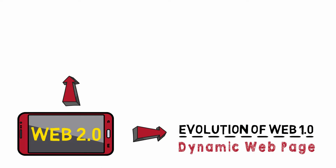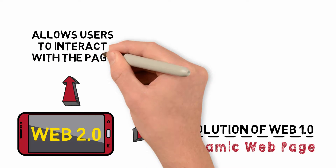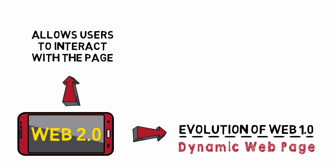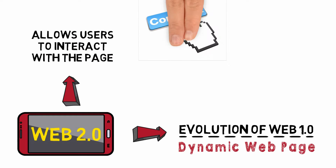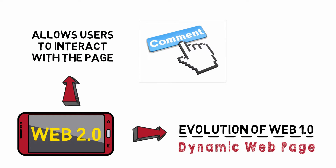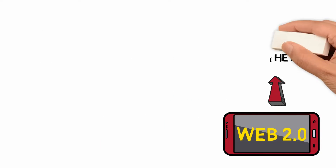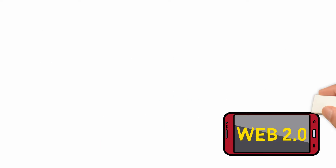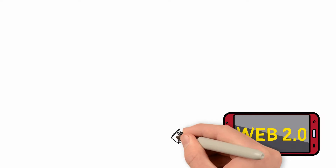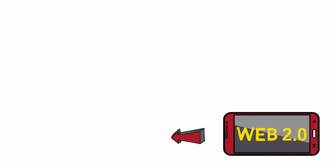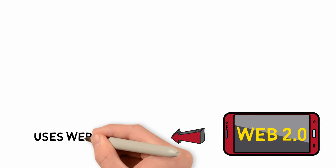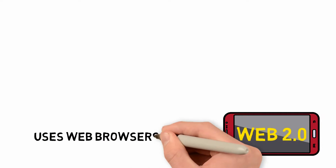Web 2.0 allows users to interact with the page. Instead of just reading a page, the user may be able to comment or create a user account. Web 2.0 also allows users to use web browsers instead of just using their operating system.